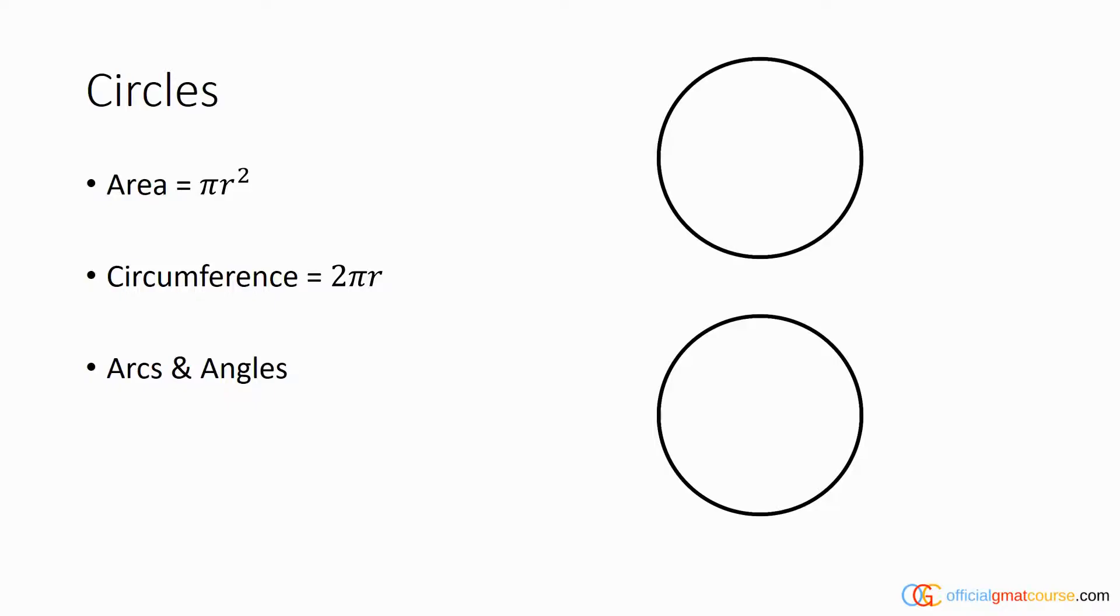There are a couple things you need to know about circles for the GMAT. The first is just a simple calculation that you may remember from high school, which is the area of a circle is pi r squared. The r represents the radius, which is from the center to one side of the circle.